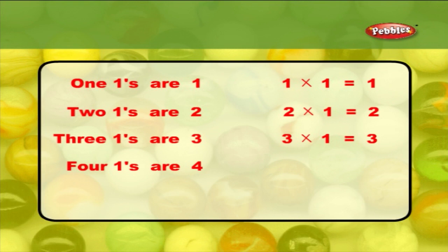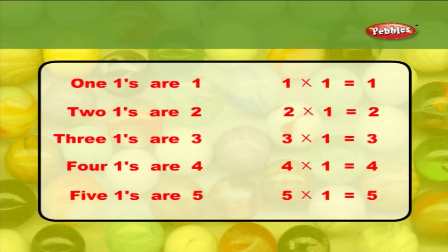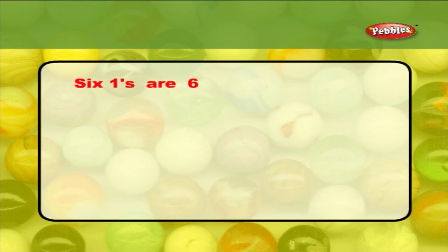Four ones are four. Four into one is equal to four. Five ones are five. Five into one is equal to five. Six ones are six. Six into one is equal to six.